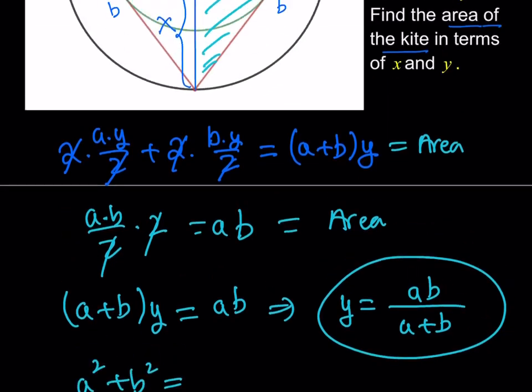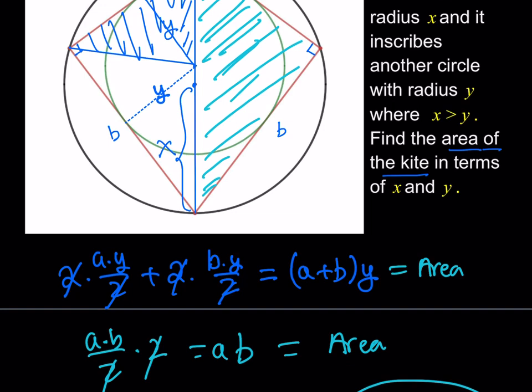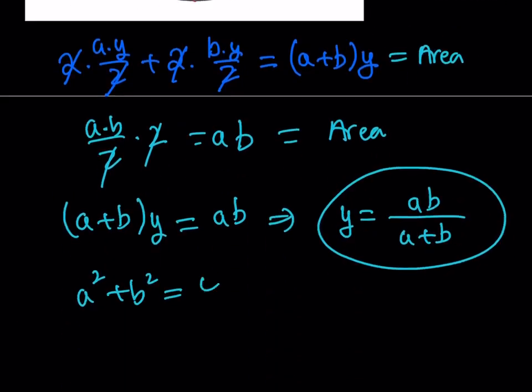So therefore, this is the area of the kite. This is the area of the kite. So since they're both areas, I can actually set them equal to each other, which is nice. Well, this gives me a plus b times y equals ab. And from here, I'm getting y equals ab divided by a plus b.